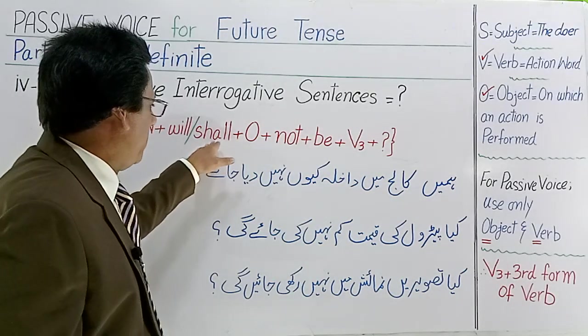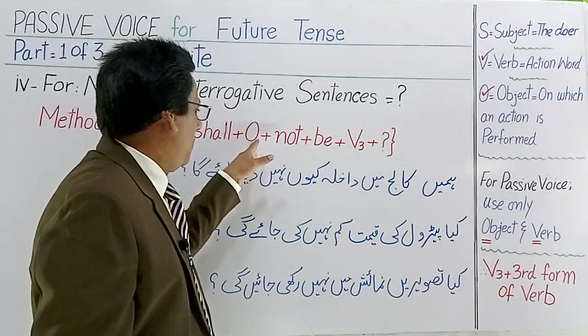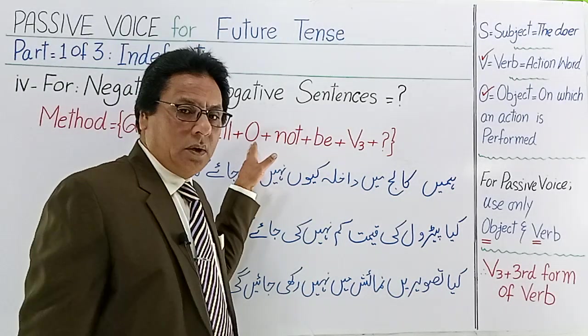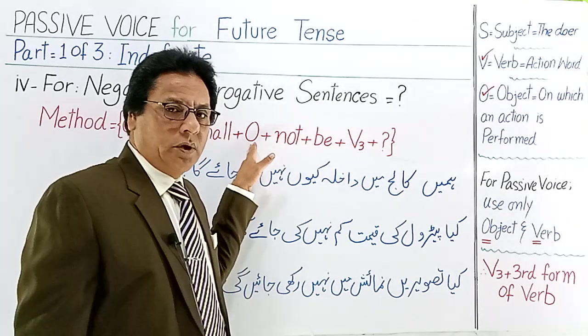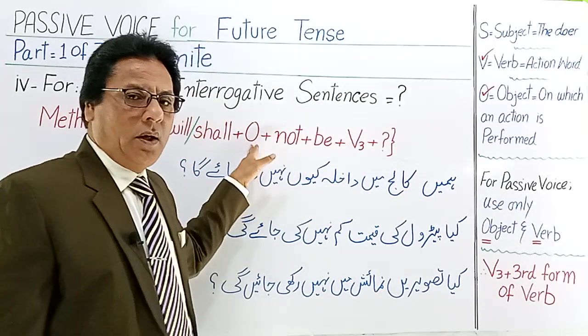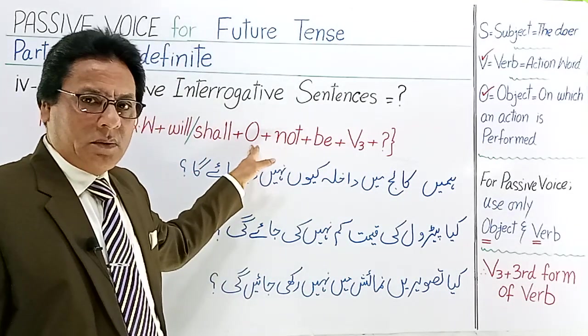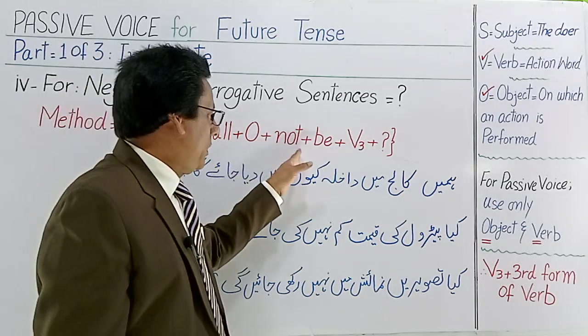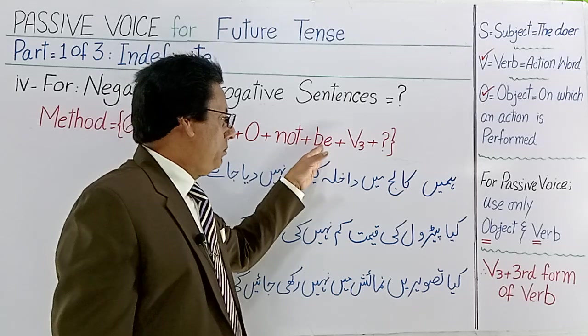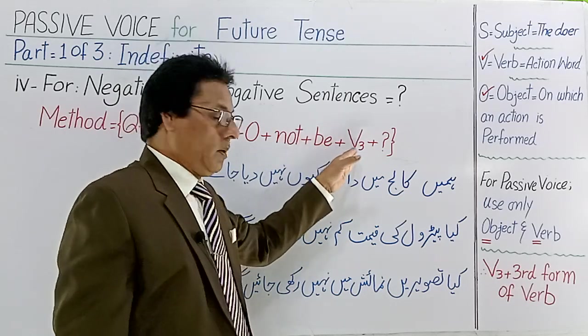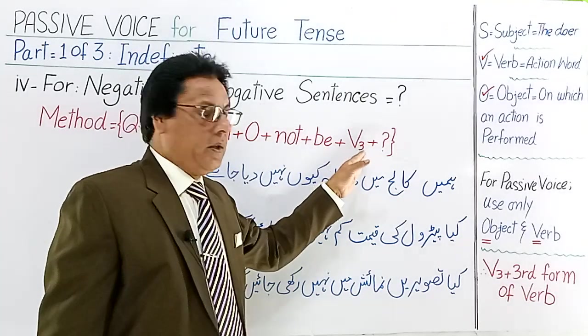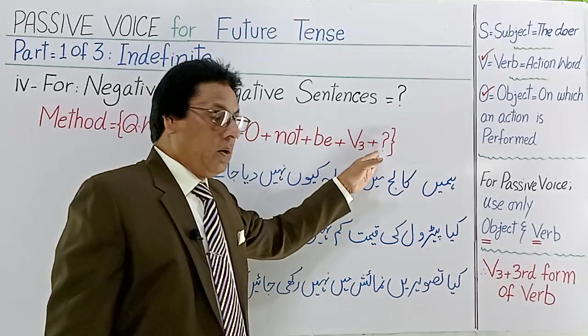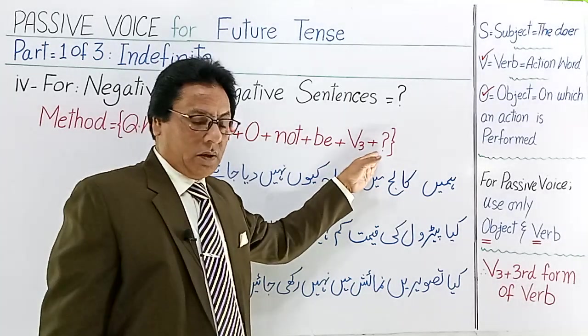Will or shall — ہمیں چوز کرنا پڑتا ہے. پھر اس کے بعد object — مفعول جس پر کام کیا جائے، on which an action is performed. پھر not آتا ہے، پھر اس کے بعد be، پھر verb کی third form، اور پھر question mark.